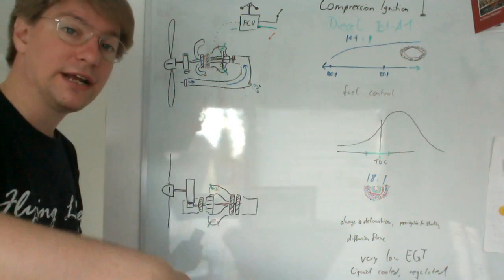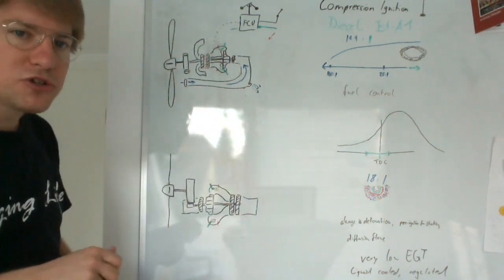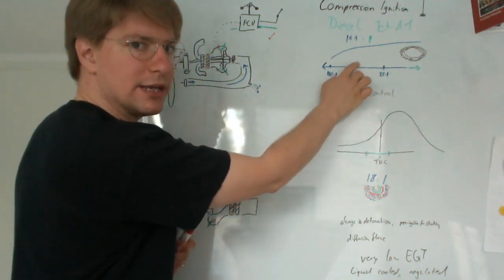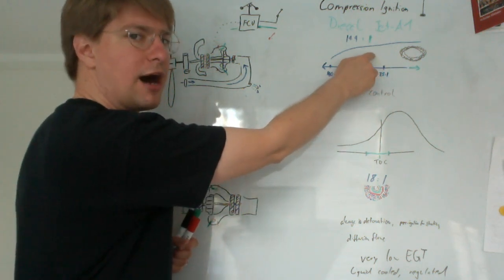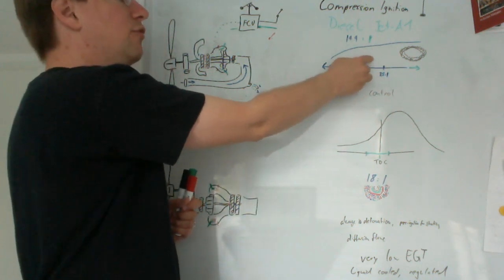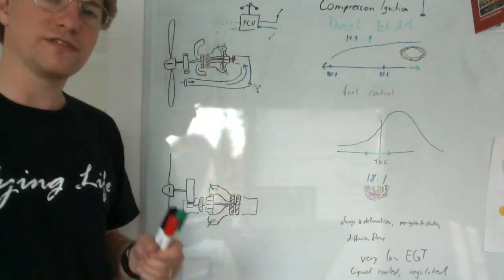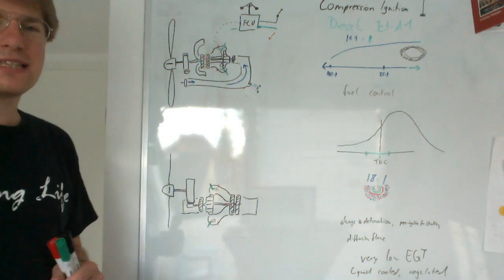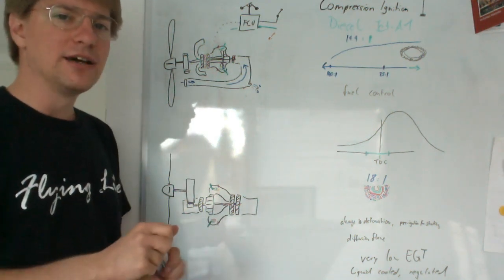The power increase on the diesel engine and the free turbine turboprop engine looks basically the same in that we inject more fuel, we move to the right on the mixture curve. And then as we come up to power, we move back to the more efficient range of the mixture curve where we want to be. In fact, you can see this on the EGT gauge of a turboprop engine.